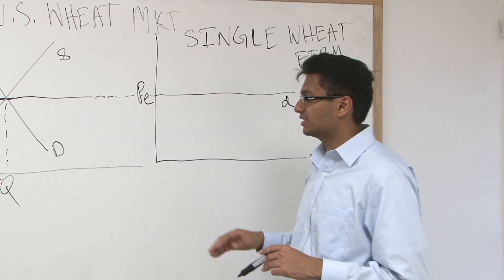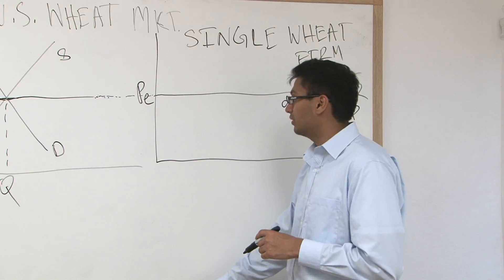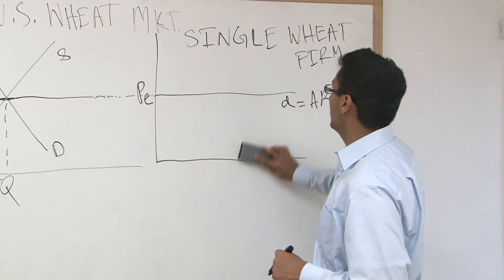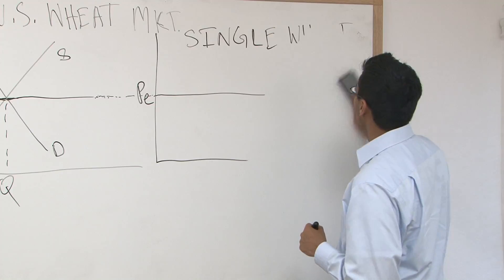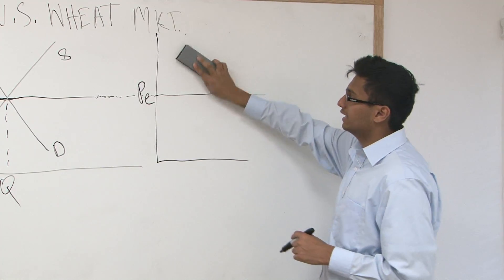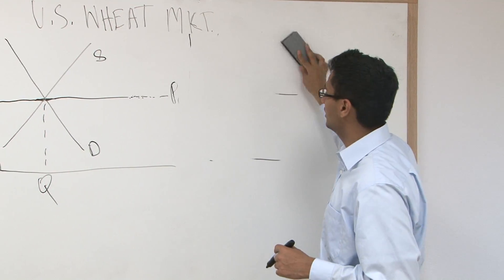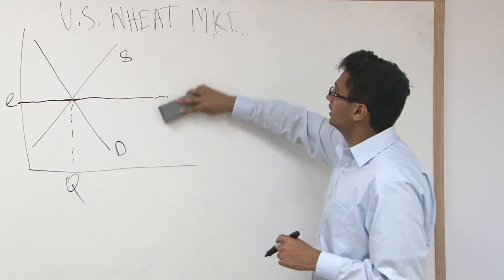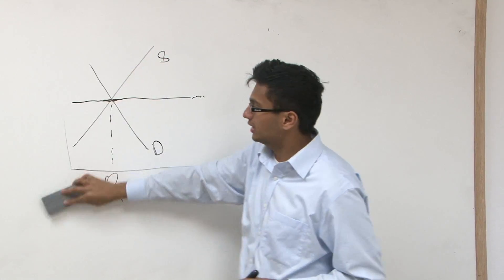The main point of the homework answer is that demand is only perfectly elastic at the firm level, while in the market the demand is downward sloping. With that, let's move on to the new stuff in perfect competition — how we talk about profit, how we show profit, and then the short-run and long-run differences.